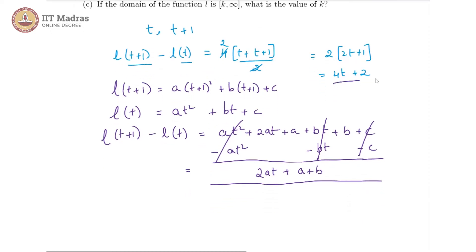We are supposed to subtract a(t squared) and bt and c, which gives us these terms canceling off.